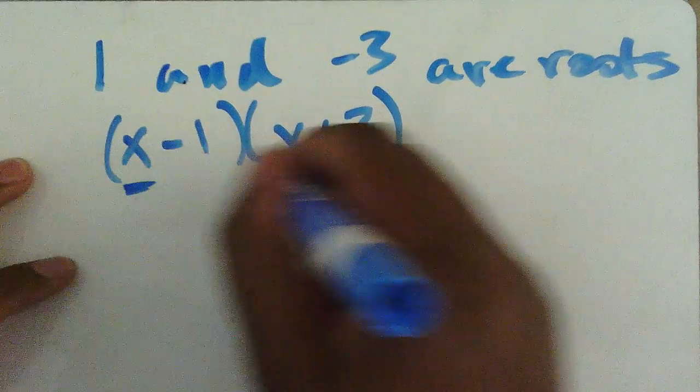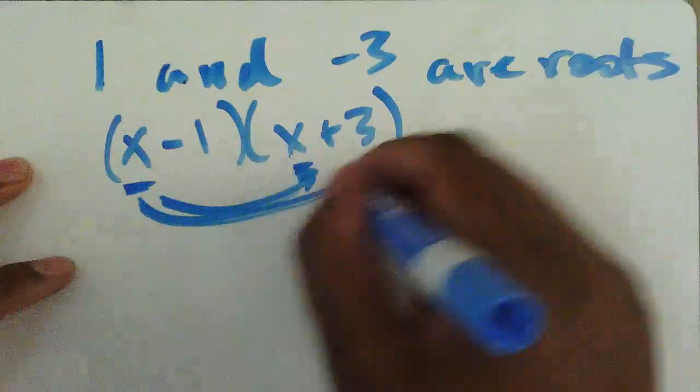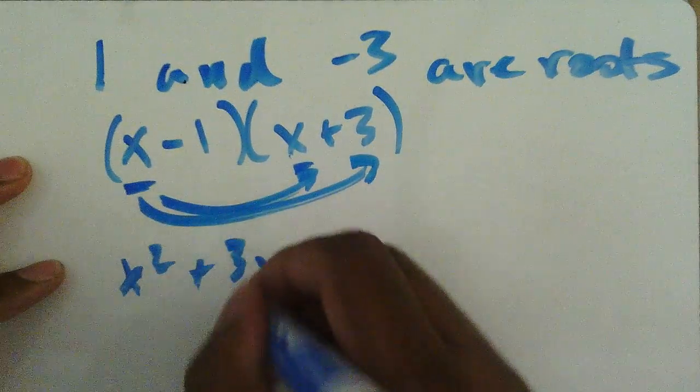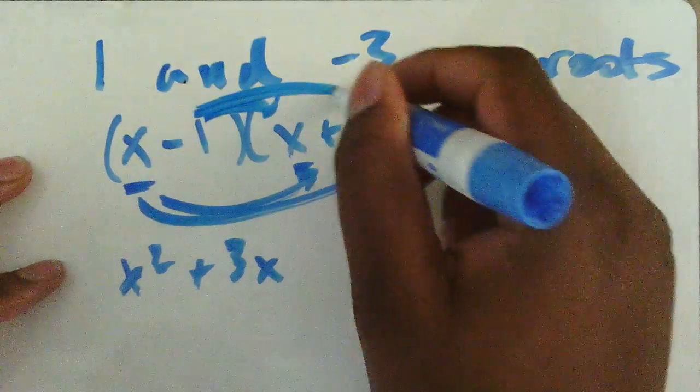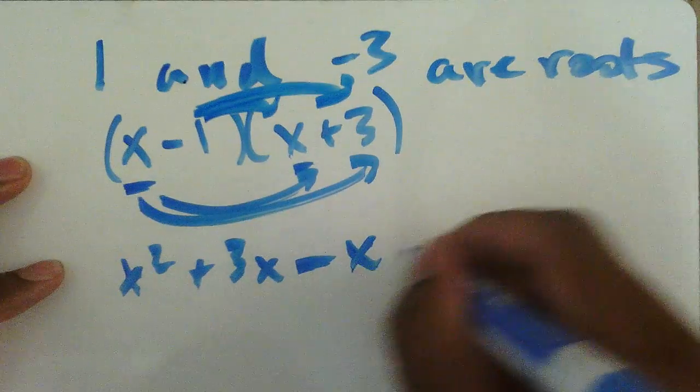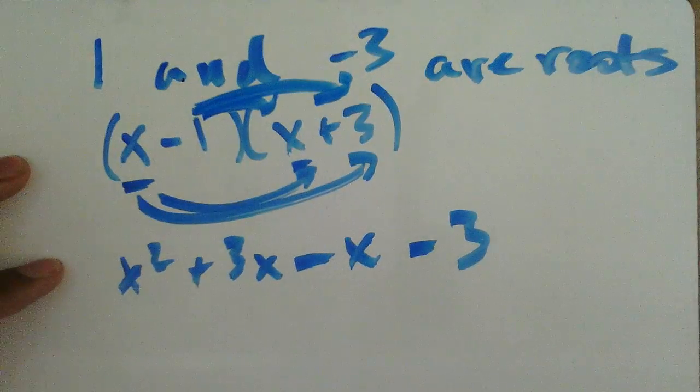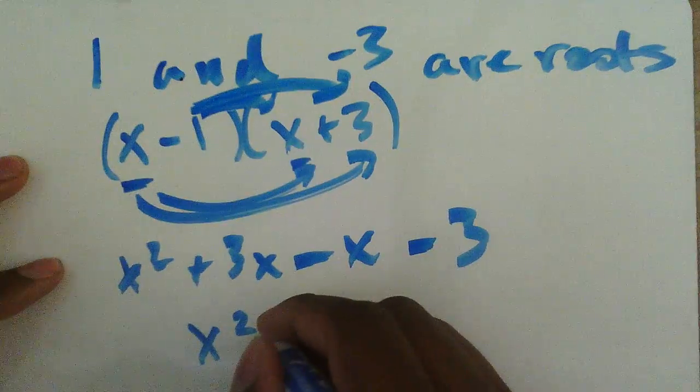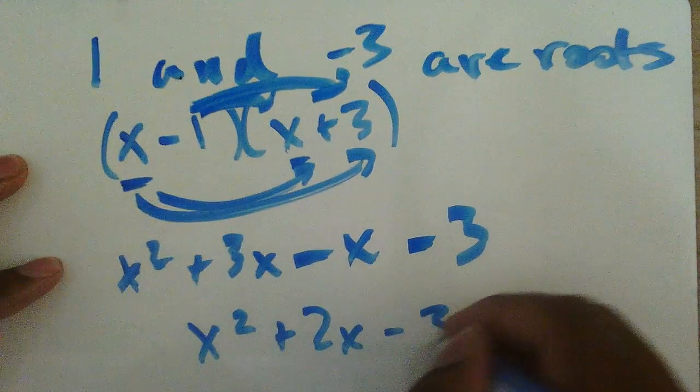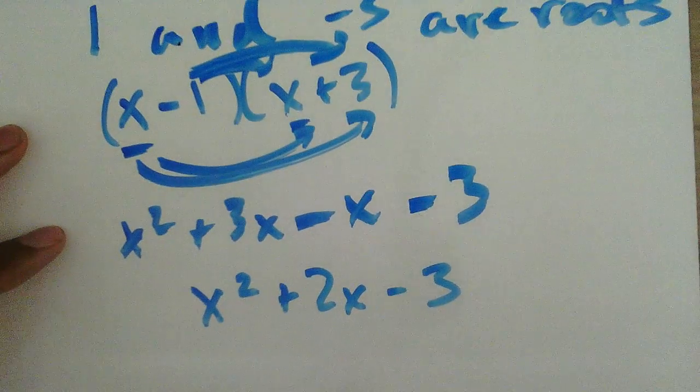If I FOIL this out, x squared plus three x, same down here, negative x minus three. x squared plus two x minus three is our quadratic.